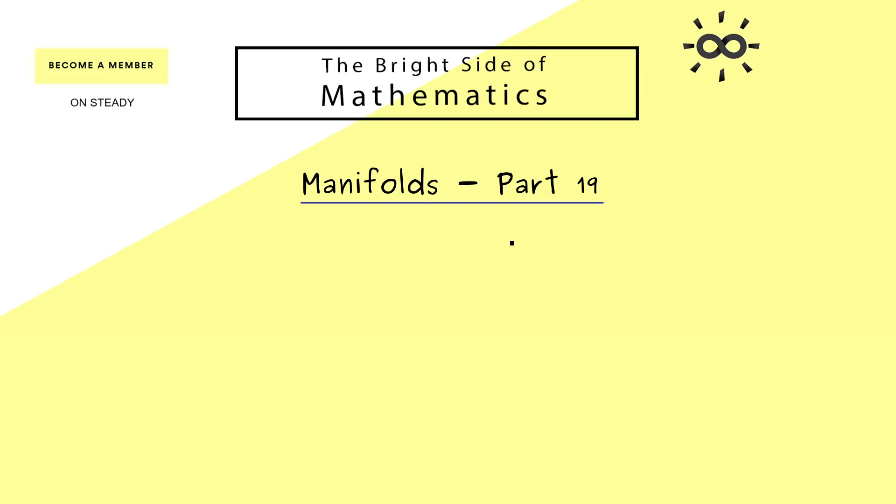We have already learned the last ones are often called submanifolds, and for these in R^n we will introduce the tangent space in today's part 19. Moreover, later we will also talk about this concept for abstract manifolds.